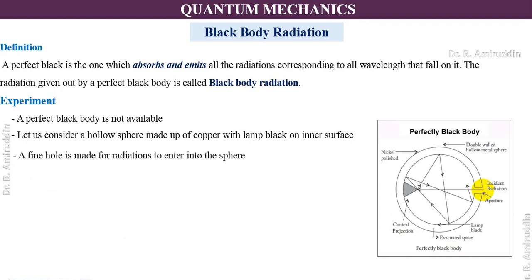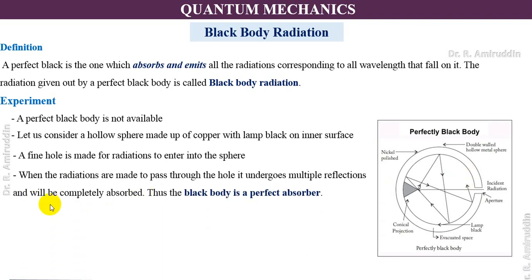All radiation is made to enter through that small hole. Once the radiation enters through the fine hole of the hollow sphere, it undergoes multiple reflections and is completely absorbed inside the blackbody. So we can say that this setup acts as a perfect absorber.